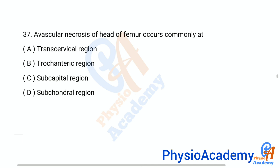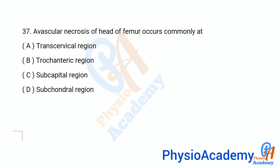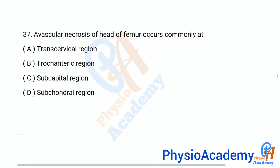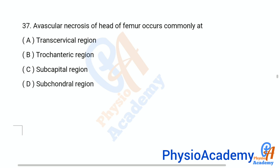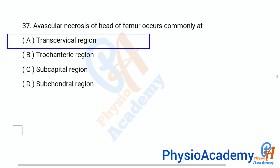Question number 37: Avascular necrosis of the head of femur occurs commonly at: option A transcervical region, option B trochanteric region, option C subcapital region, option D subcontrol region. The correct answer is option A, transcervical region.